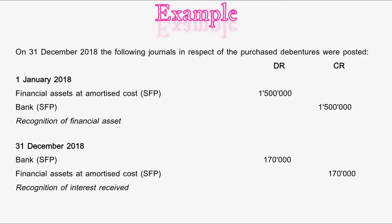On the 31st of December 2018, the following journals in respect of the purchased debentures were posted. 1st January 2018: Financial Assets at Amortized Cost (Statement of Financial Position) — debit 1.5 million rand; Bank (Statement of Financial Position) — credit 1.5 million rand. This was to recognize the financial asset. 31st December 2018: Bank (Statement of Financial Position) — credit 170,000 rand. This was for the recognition of interest received.